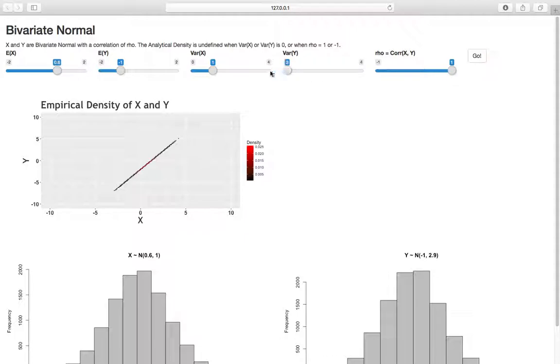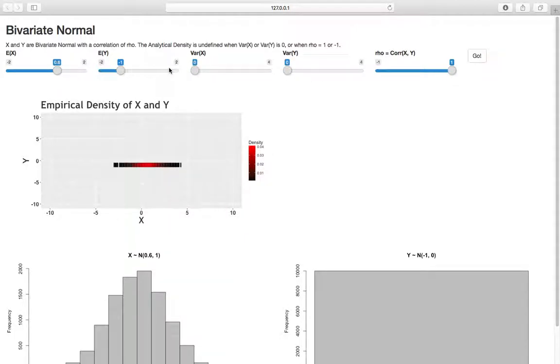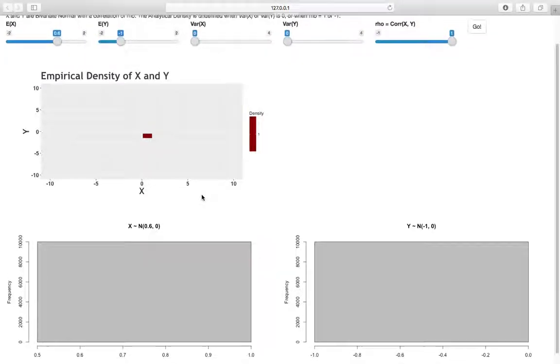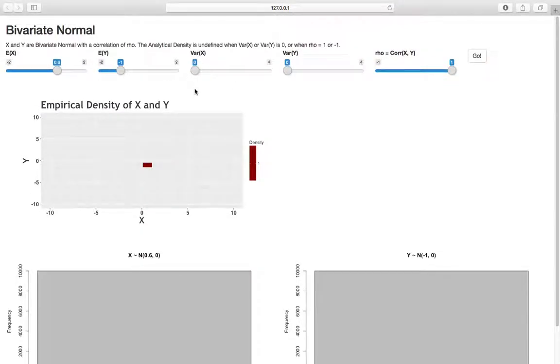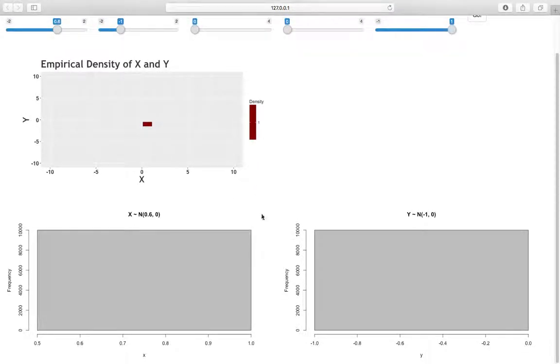We set the variance equal to zero here. When the variance is equal to zero, X and Y are constants. So if the variance of X is zero and the mean of X is 0.6, then X is just 0.6. And if the variance of Y is zero and Y is negative one, then Y is just negative one. So this joint density is just one point. It's 0.6, negative one for Y. And you can see over here, the density key is just one. The density is one, because that's the only point. You can see these histograms down here. R doesn't know what to do because there's only one point.